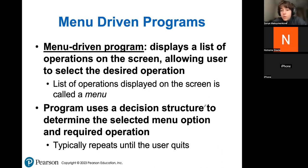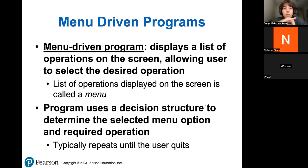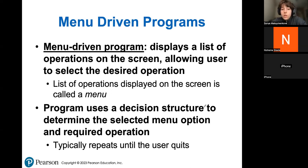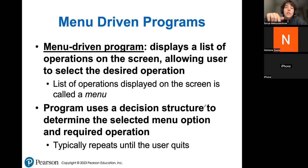Menu driven programs — you should also be familiar with those. I think this is the last topic for today. A menu driven program is when a list of operations is displayed on your screen with choices the user can make — for example, one: display next page, two: display main menu, three: display something else. You should be fairly familiar with those because they're literally everywhere — even on your phone when you log in to social media, you have many different options: go to your profile, go to your page, send a message to friends. Those are all part of menu driven programs — they give the user an opportunity to pick whatever they want to do.